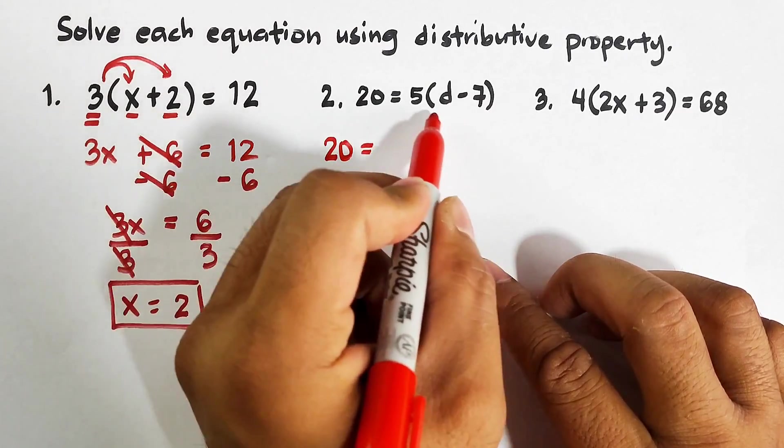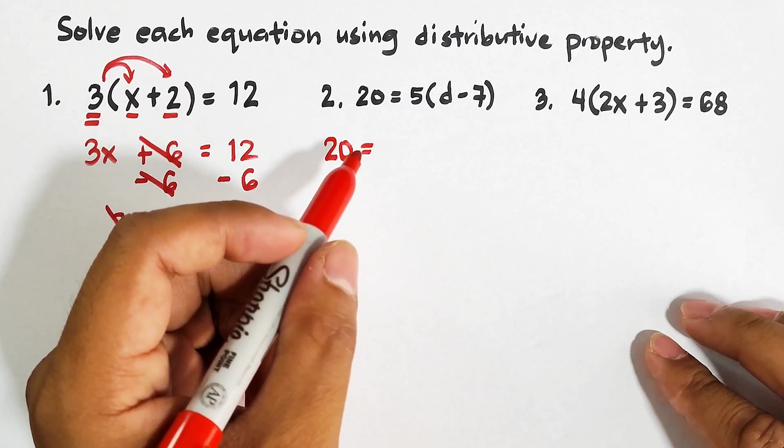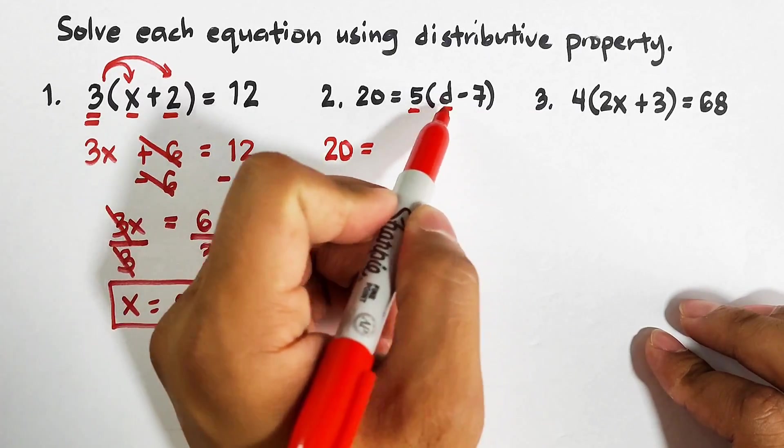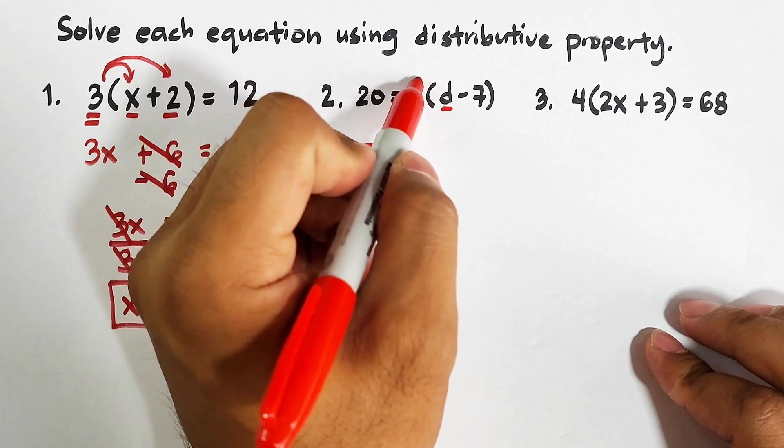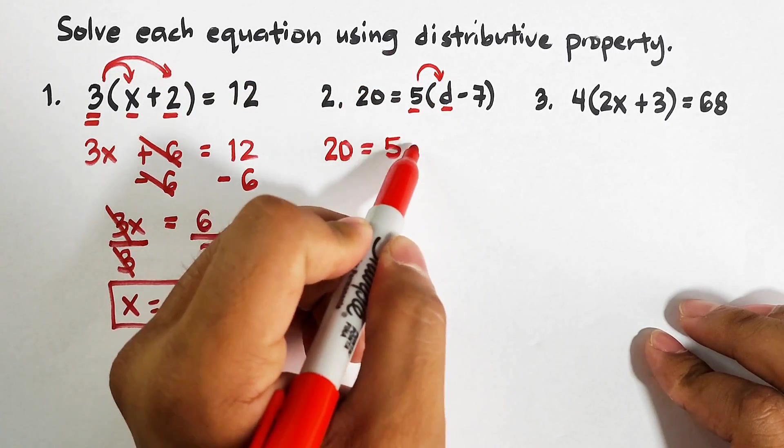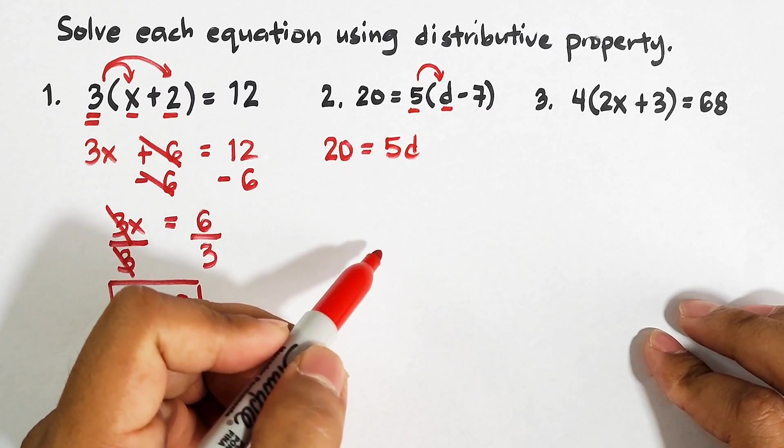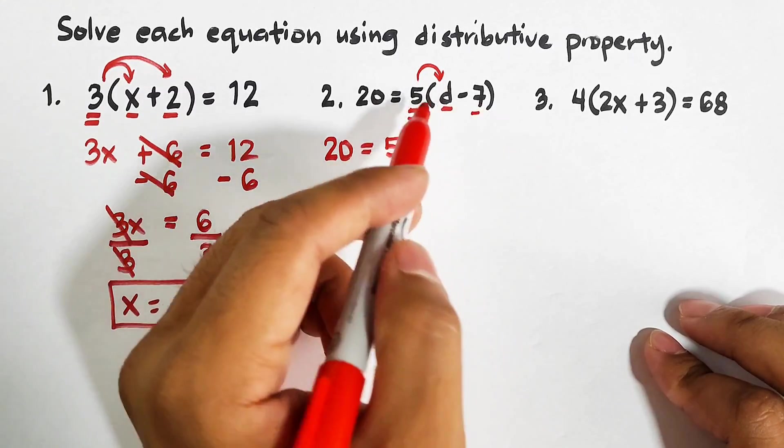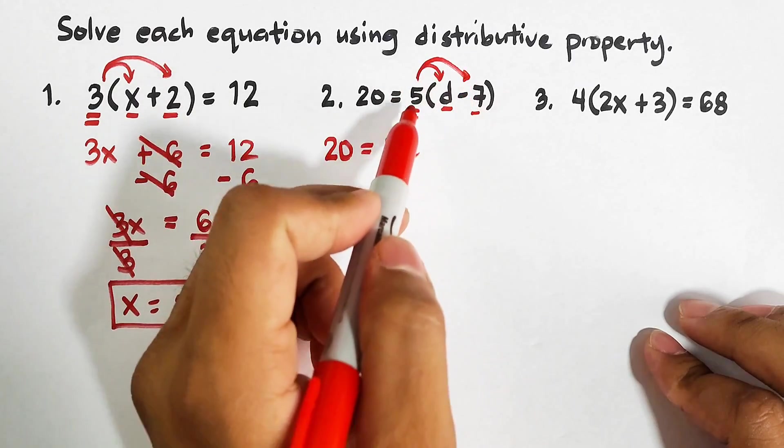As for the right side of the equation, this part, we still need to use the distributive property. 5 and d, let's multiply them: 5 times d, that is 5d. And then for this one, 5 and negative 7, we have 5 times negative 7, that is negative 35.